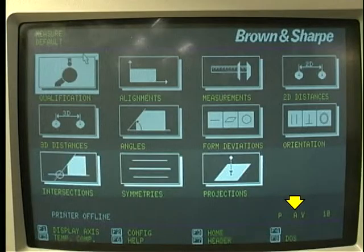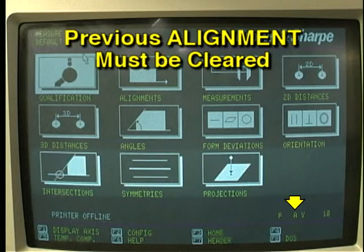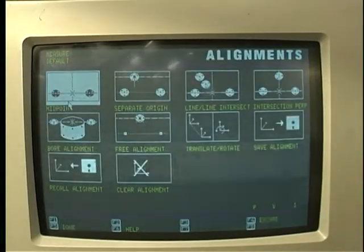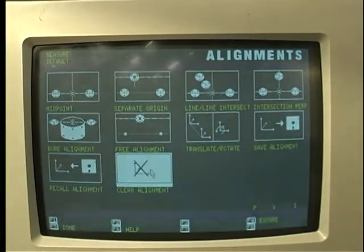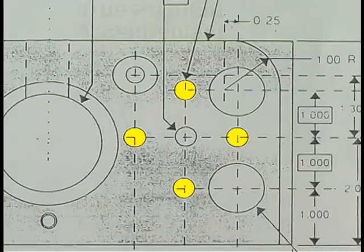The letter A on the status line means the coordinate grid of the CMM is already aligned to some point. This means a previous alignment is still active in the computer and must be removed. To remove the previous alignment, click on the alignments icon. Next, click on the clear alignment icon. The menu display returns and the letter A has disappeared from the status line.